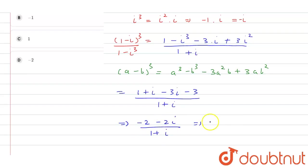If I take minus 2 as common, then we get 1 plus iota in the numerator and 1 plus iota in the denominator. This value cancels out and we get minus 2. So we can see option D is the right answer.